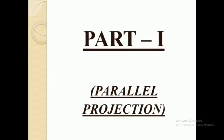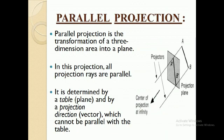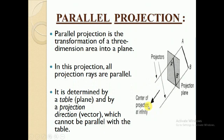Let's start with parallel projection. Parallel projection is the transformation of three-dimensional area into a plane. As the name suggests, this projection has all projection rays parallel. As you can see in the diagram, AB is the three-dimensional object which is projected on a projection plane and we get the object as A'B' with parallel lines from the end points. Here the center of projection is at infinity.